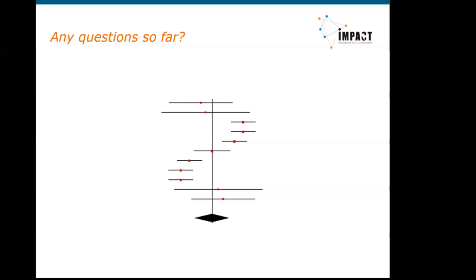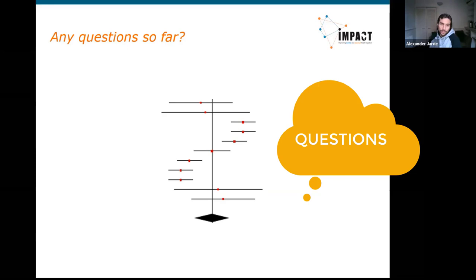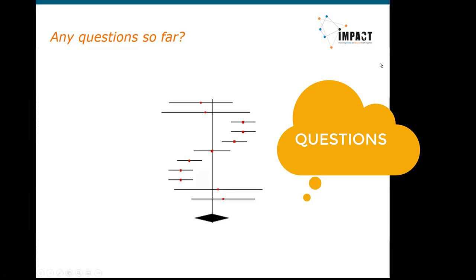Somebody on the chat mentions the I-squared test, which is coming up in the slides as a way of formally measuring heterogeneity — we can park that for now. There are plenty of questions about heterogeneity, and we'll do a deeper dive later. For now, just being aware that heterogeneity refers to variability in the results of different studies is enough. The visual on the current slide is a good illustration — each study has a different result, and that variation between them is heterogeneity.